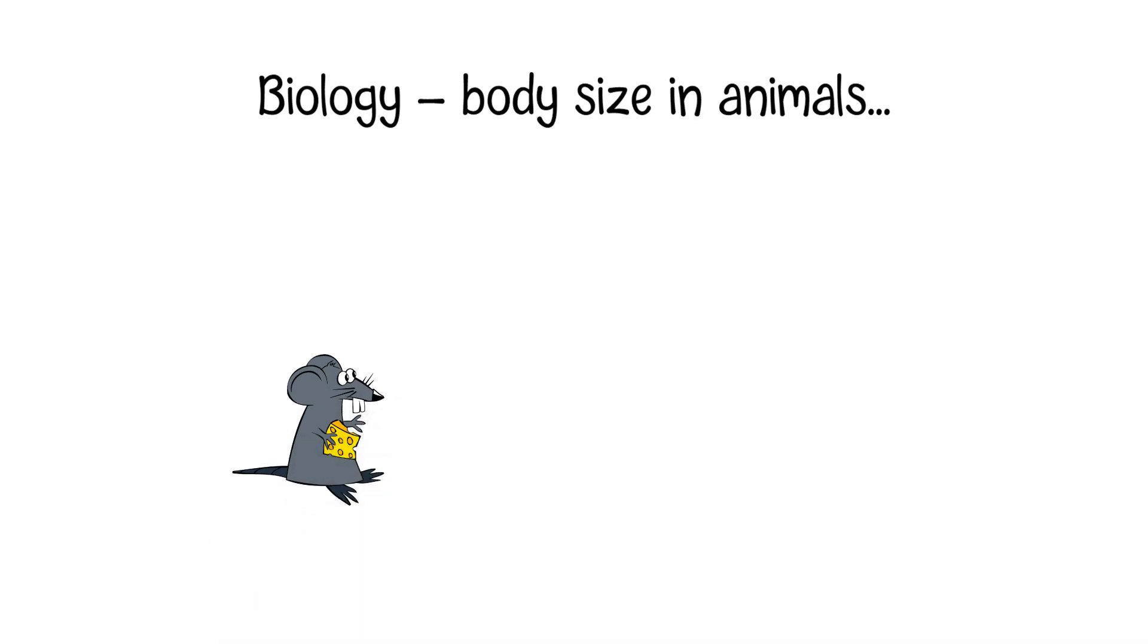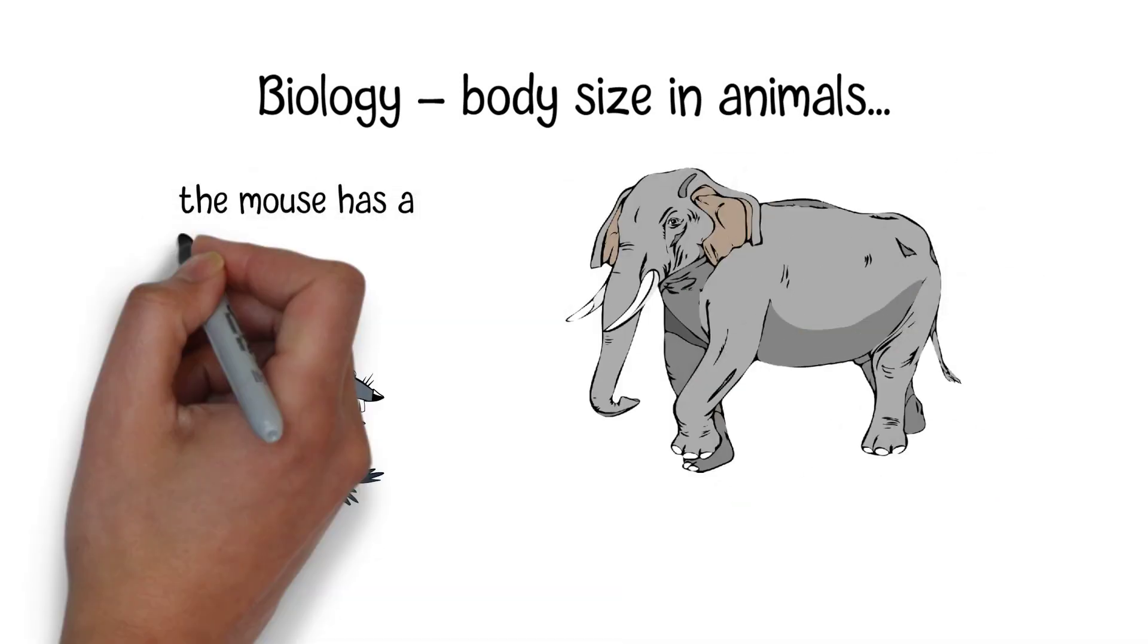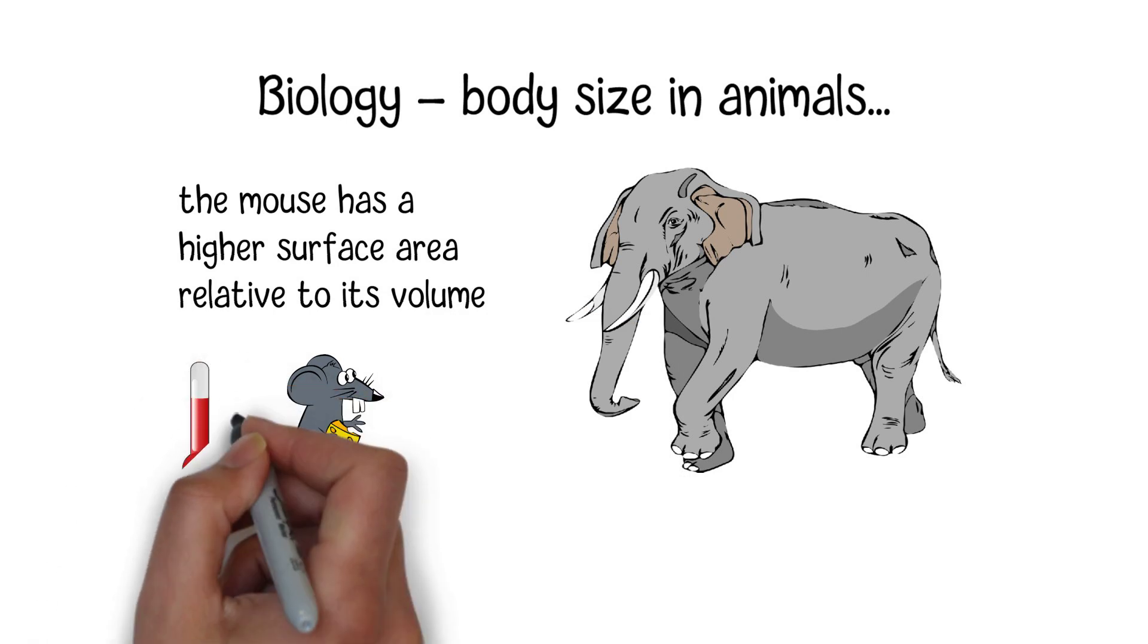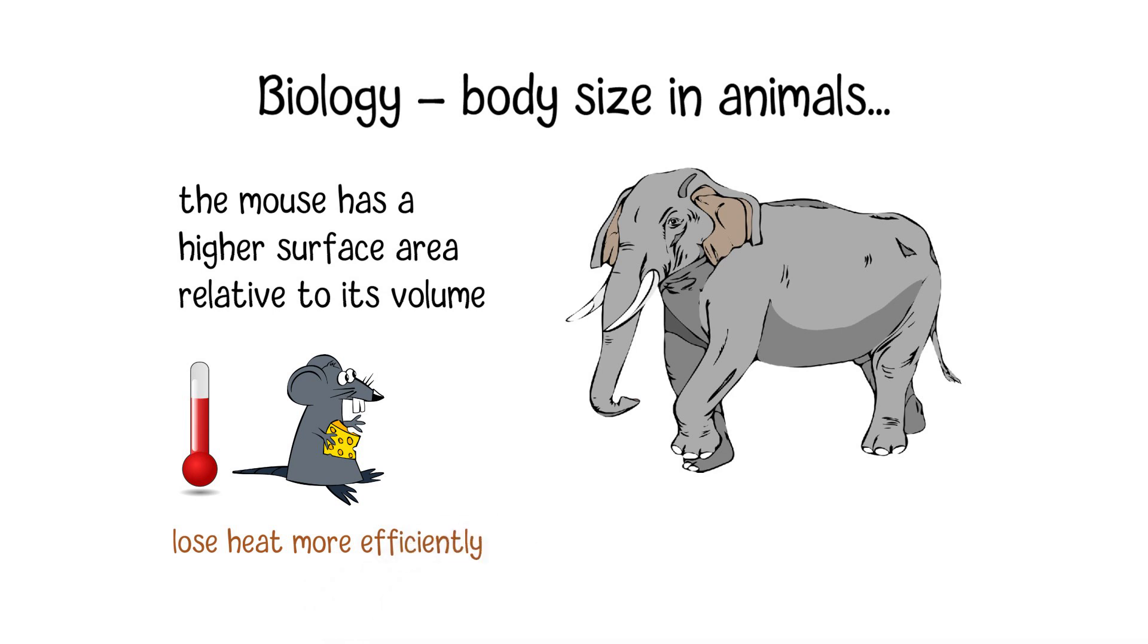For instance, if we compare a small mouse to a large elephant, we find that the mouse has a higher surface area relative to its volume. This allows the mouse to lose heat more efficiently, making it easier for them to regulate their body temperature. In contrast, the elephant's larger volume relative to its surface area makes heat regulation a more significant challenge.